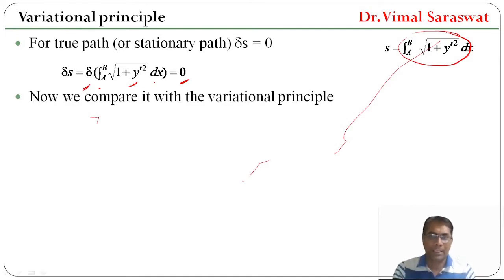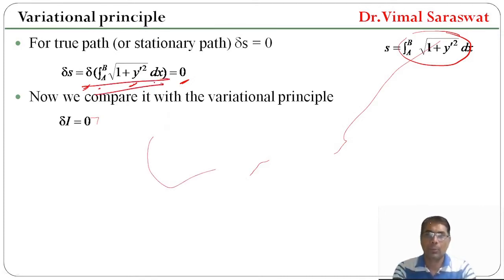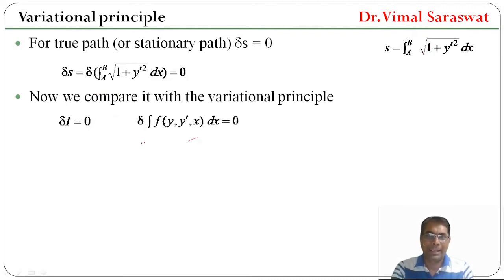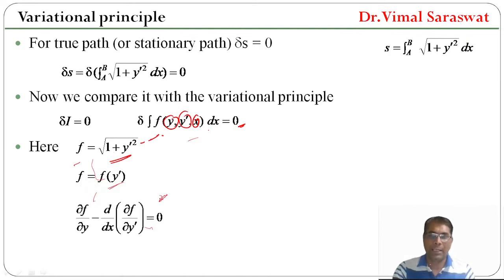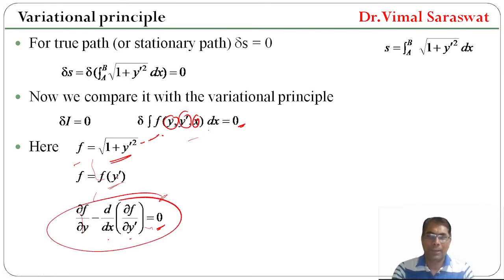We compare this with the variational principle: δI = 0, or δ∫F dx = 0. Here F is a function of y, y', and x. In our case, F = √(1 + y'²), which means F is a function of y' only and does not depend on y explicitly.